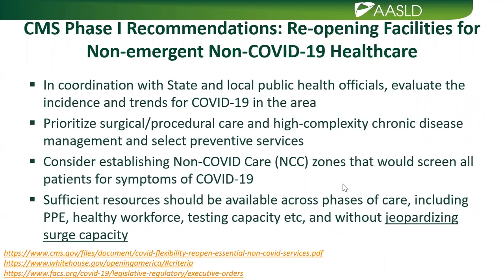CMS came up with phase one recommendations about reopening facilities for non-emergent healthcare. The guidelines are clear that we must work with state and local public health officials to evaluate COVID-19 incidence and trends in our own area, prioritize procedures and high-complexity care, maintain a non-COVID care zone that screens all patients for COVID symptoms, and ensure sufficient resources including PPE, a healthy workforce, and testing capacity — without jeopardizing our surge capacity.